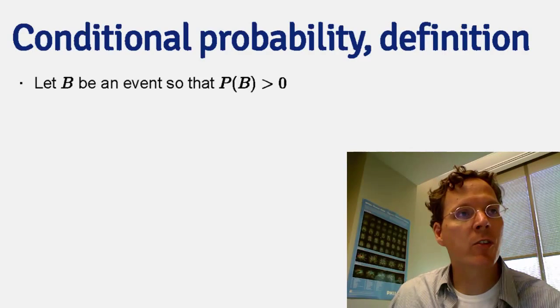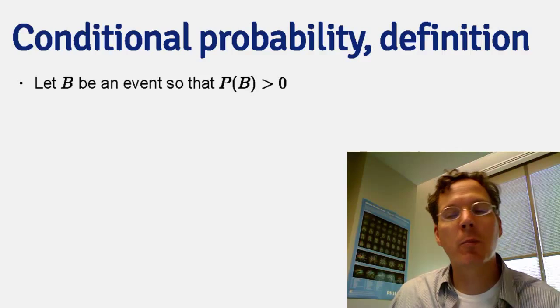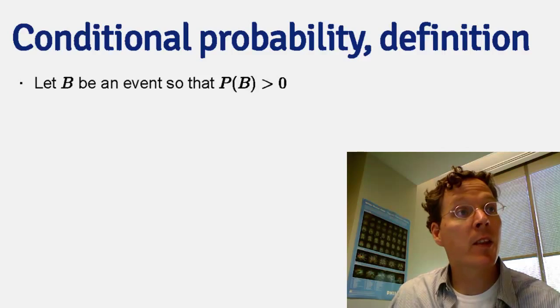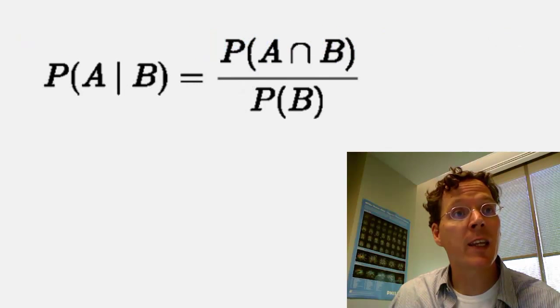So let's let B be an event such that the probability of B is greater than 0. And this is important because there's no sense in conditioning on an event that can't happen. Then the conditional probability of an event A, given that B has occurred, is written like this.